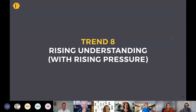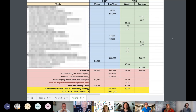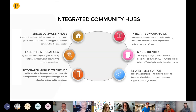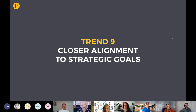Trend number eight is a rising understanding of communities, but that comes with rising pressure. Looking at the State of Community Management Report by the Community Roundtable, people are more familiar with communities than ever. It's getting easier to get budgets for the strategies we want. We're also seeing a trend for integrated community hubs — everything in one place rather than the community being hived off separately. Trend nine is closer alignment to strategic goals. Communities are no longer just cool side projects; they're being very closely aligned to organizational strategy, which is good, but also means more pressure to deliver results.